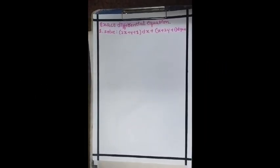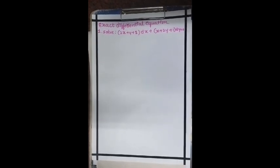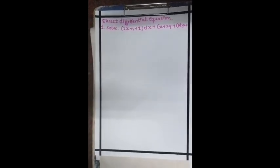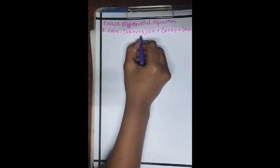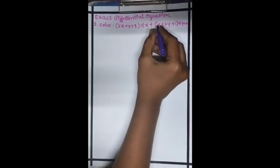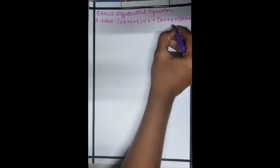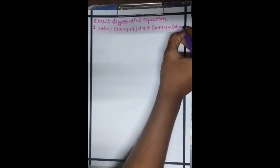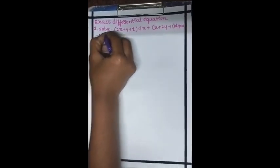Hello everyone, today we will solve the problem on exact differential equation. The question is (2x + y + 1)dx + (x + 2y + 1)dy equal to 0. First we have to check the equation.